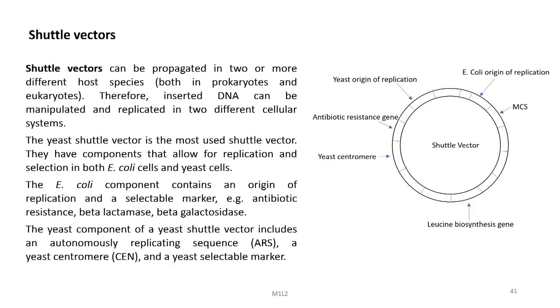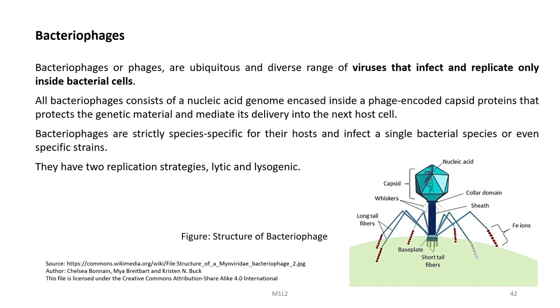Let us discuss shuttle vectors. Shuttle vectors are vectors which can be propagated in two or three different host species — both in prokaryotes and eukaryotes. Therefore, inserted DNA can be manipulated and replicated in two different cellular systems. The yeast shuttle vector is the most used shuttle vector. They have components that allow replication and selection in both E. coli cells and yeast cells. The E. coli component contains an origin of replication and a selectable marker such as antibiotic resistance. The yeast component includes an autonomously replicating sequence, a yeast centromere, and a yeast selectable marker.